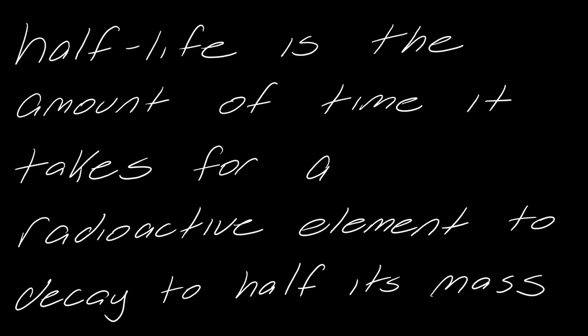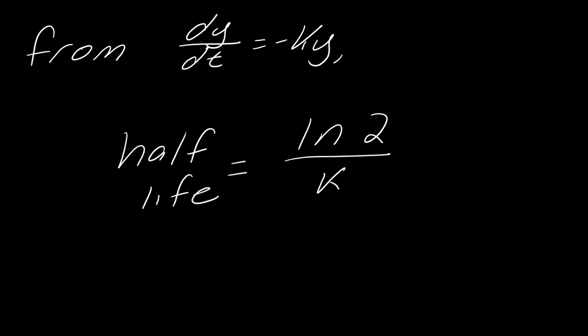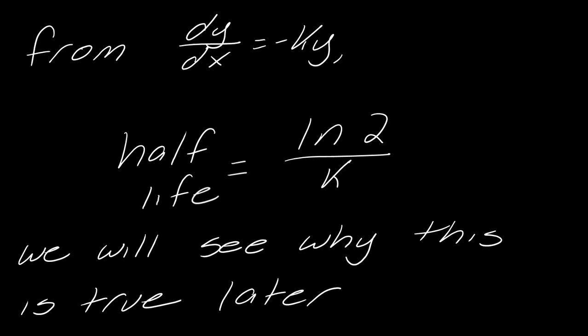Half-life is the amount of time it takes for a radioactive element to decay to half its mass. And so from this differential equation, we get this kind of surprising result that half-life equals the natural log of 2 divided by k. One thing I'm going to do in this video is show you why this is true — the natural log of 2 seems like such a random thing. Just keep this fact in the back of your mind because we're going to come back to it later in a sneaky way.